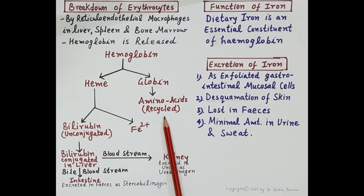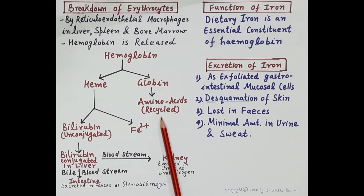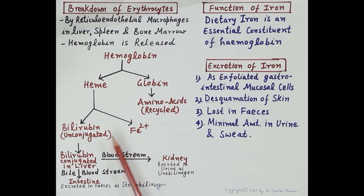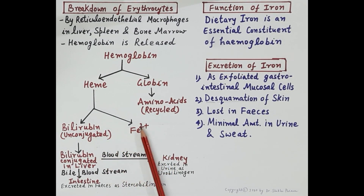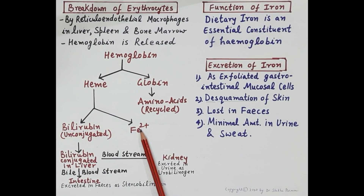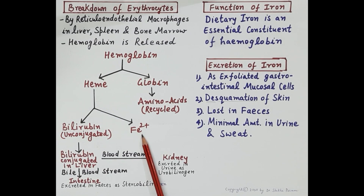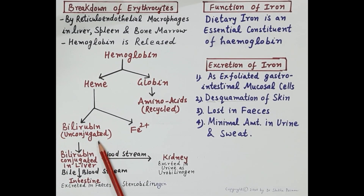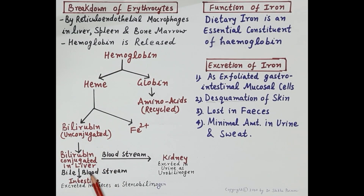Globin is broken down into amino acids, which are recycled and used for protein synthesis in the body. The heme iron further breaks down into bilirubin and Fe2+ ferrous iron. This ferrous iron is recycled and utilized by the body for the formation of RBCs. Bilirubin, in its unconjugated form, reaches the liver where it is conjugated, and this conjugated bilirubin is released in the bile.